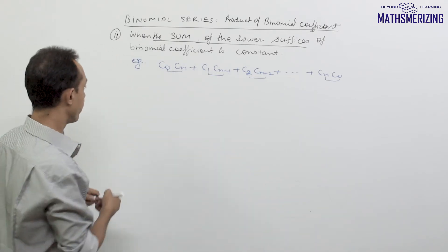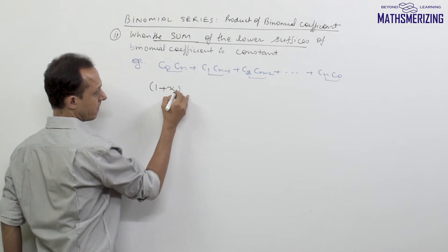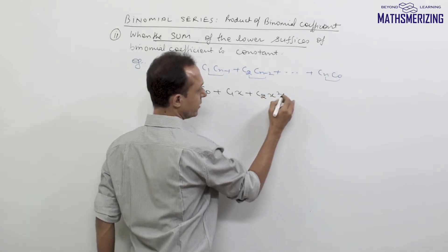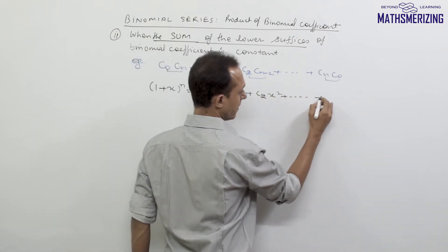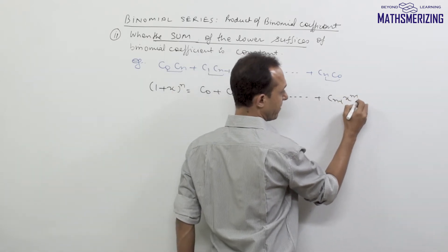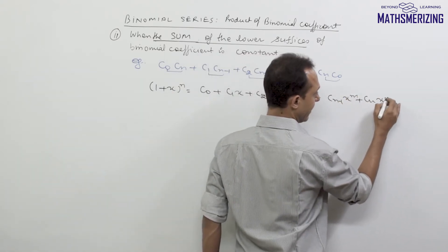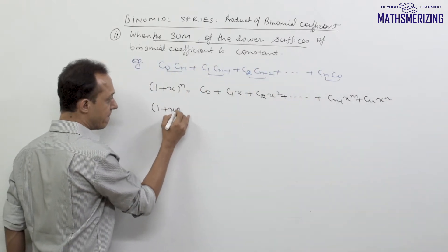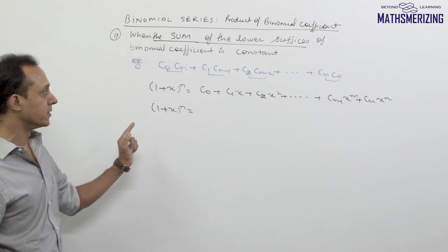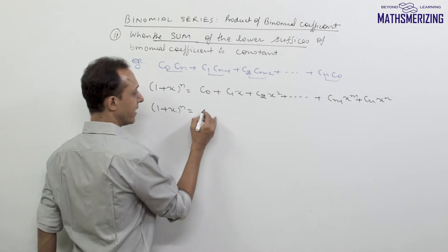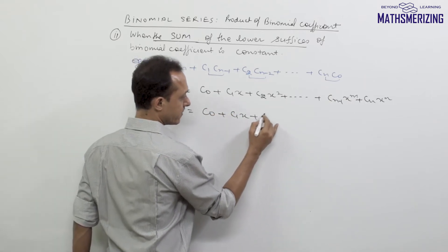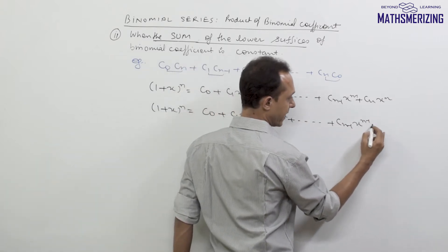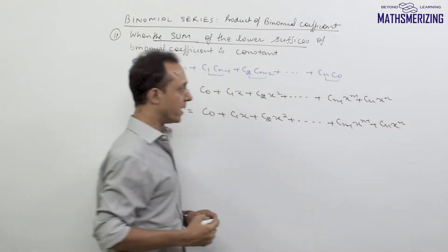We start with the expansion of (1+x)^n: C0 plus C1·x plus C2·x² and continuing to C(n-1)·x^(n-1) plus Cn·x^n. Since the sum is already constant, we need not reverse the series. So we again write (1+x)^n as C0 plus C1·x plus C2·x² up to C(n-1)·x^(n-1) plus Cn·x^n.